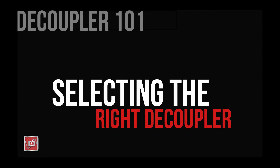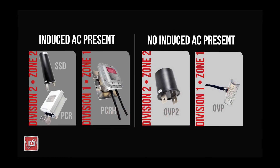Now that we have a good understanding of what a decoupler is and how it's used, let's spend a few minutes discussing how you choose which of Dairyland's product families to use. We'll start with the five most commonly used products: the PCR, SSD, OVP, OVP2, and the PCRH. For most corrosion industry applications, you'll end up selecting one of these units. Here I've grouped these five products into boxes based on their capabilities.